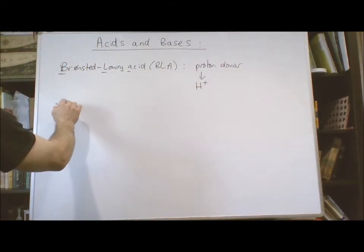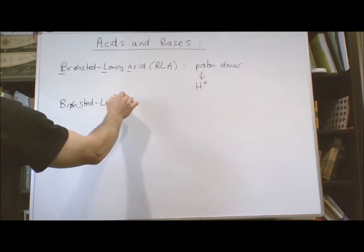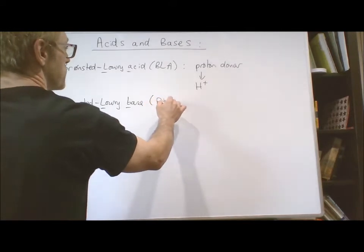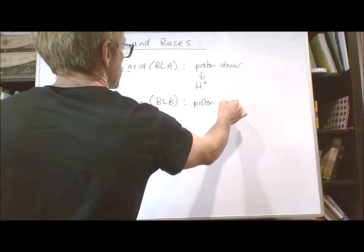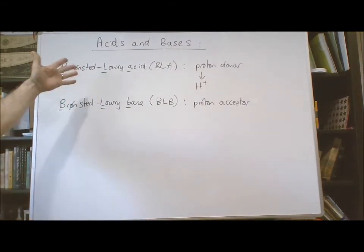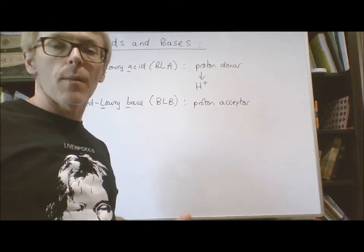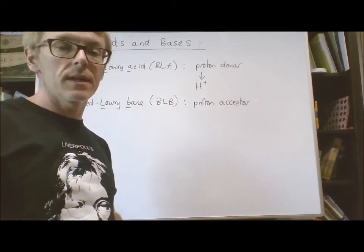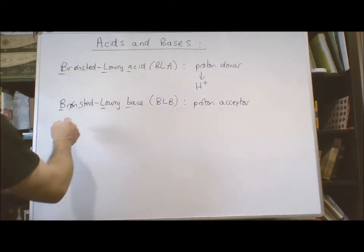A Brønsted-Lowry base, which I'll call BLB, is a proton acceptor. The only difference between the definition of an acid and a base is the words 'donor' and 'acceptor,' which are semantic opposites — so therefore, acids and bases are chemically opposite in their behavior in general.